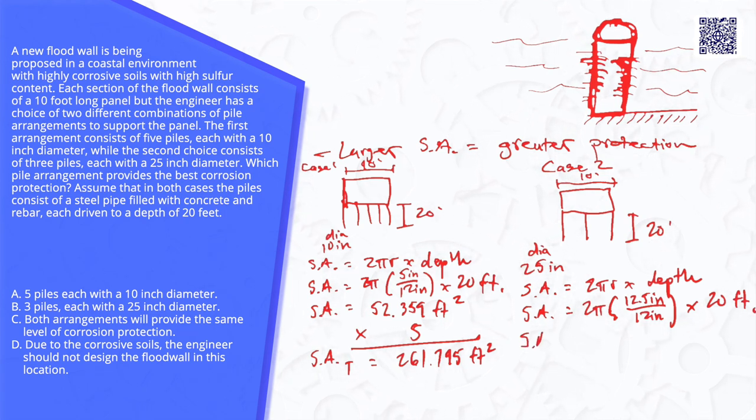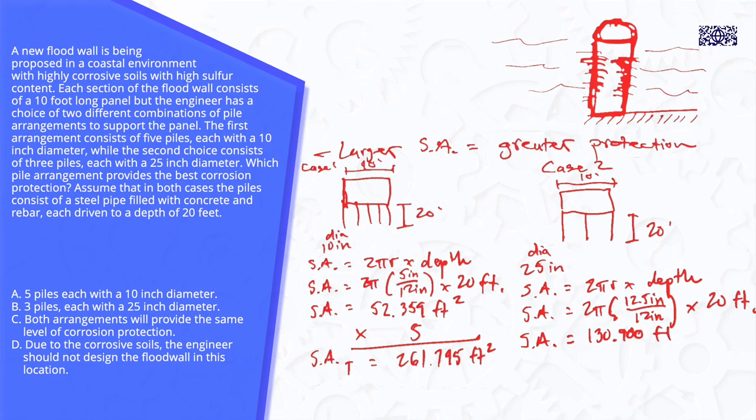And so for surface area for one column in case two, 130.900 feet squared. And we're going to multiply this by 3 to get the total surface area.